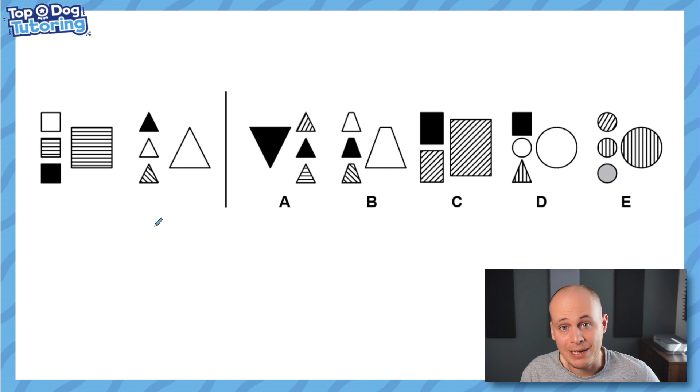So the way to do that is to think about similarities and differences of the figures on the left. Now anything that they have in common we're going to say is a rule. That makes a rule for being in that club and anything that is different about them means it doesn't matter. So therefore we're not going to be picky if they also have a different feature in that way then it doesn't matter. We're just looking for those similarities.